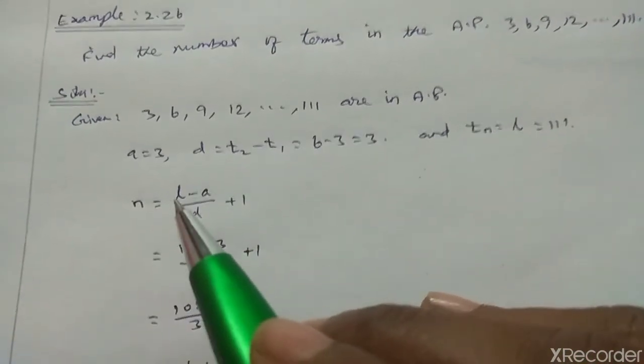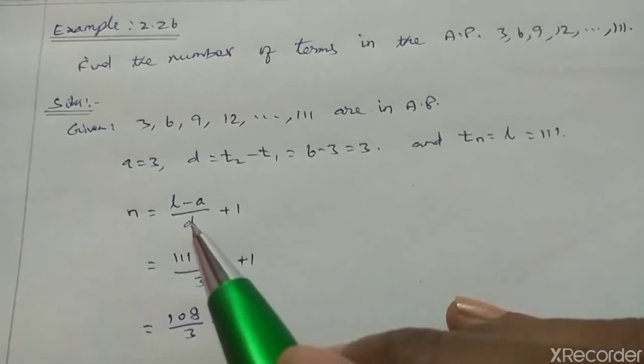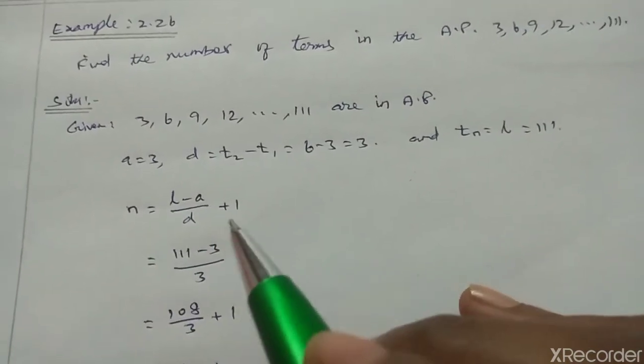The formula to find the number of terms is: n equals L minus A by D plus 1.